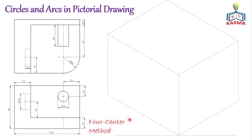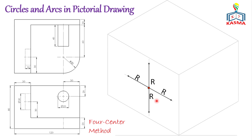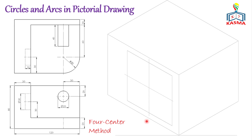If the ellipse exists on the vertical plane, we use the center of the circle and the radius to construct the rhombus on that plane. From the center point, we construct one vertical construction line and one line parallel to the axis. We then measure radius r in all four directions to get the four points, and construct the rhombus from these dimensions.